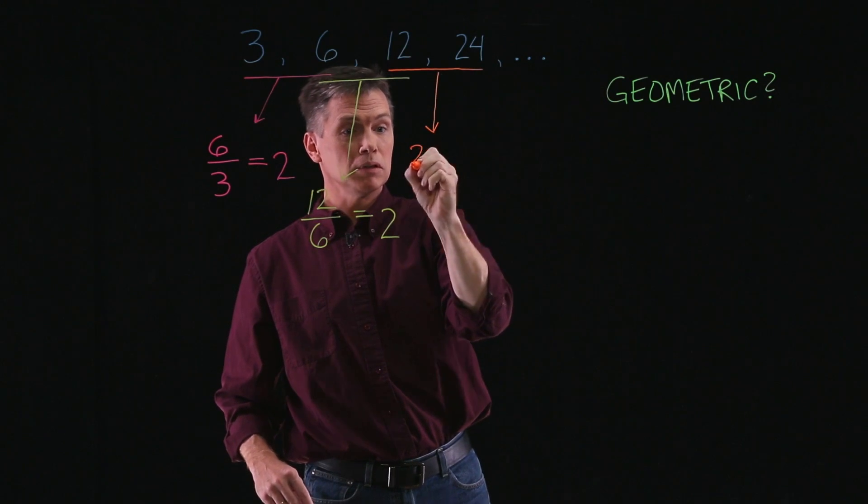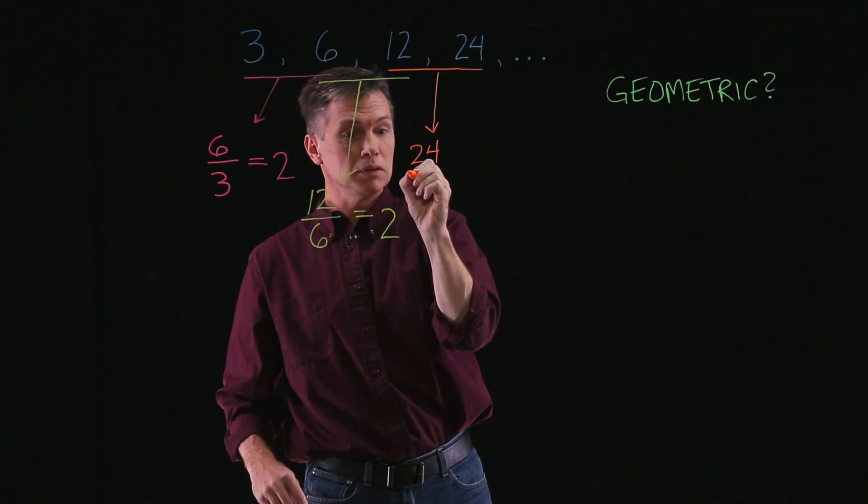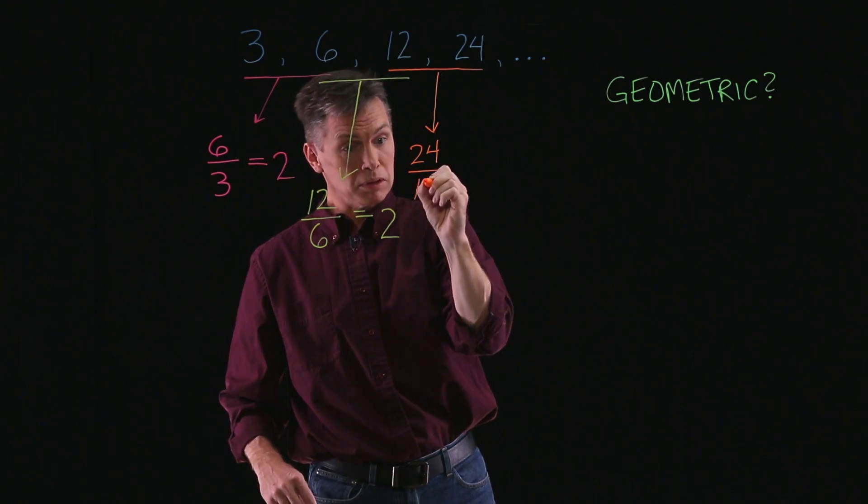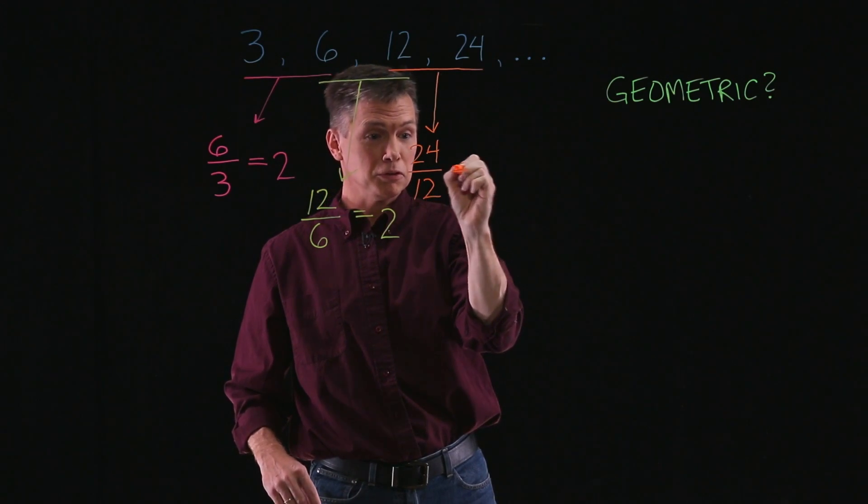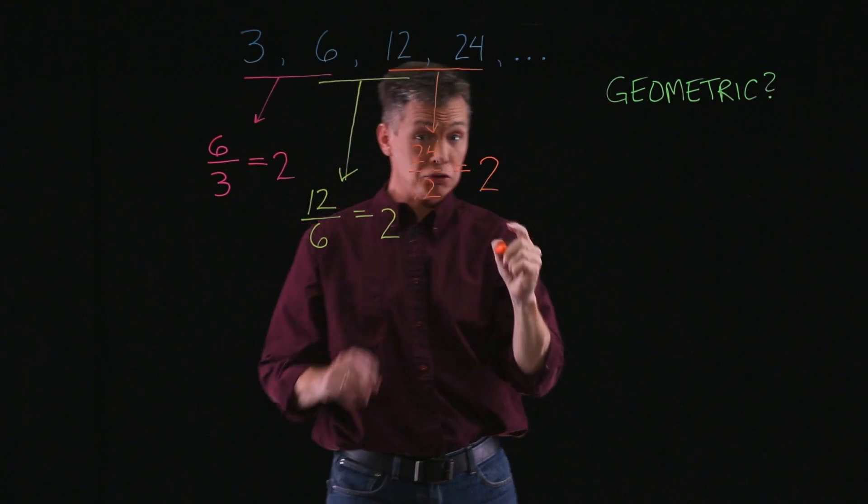The later number, 24, divided by the earlier number of 12. This is looking great. We also get a 2.